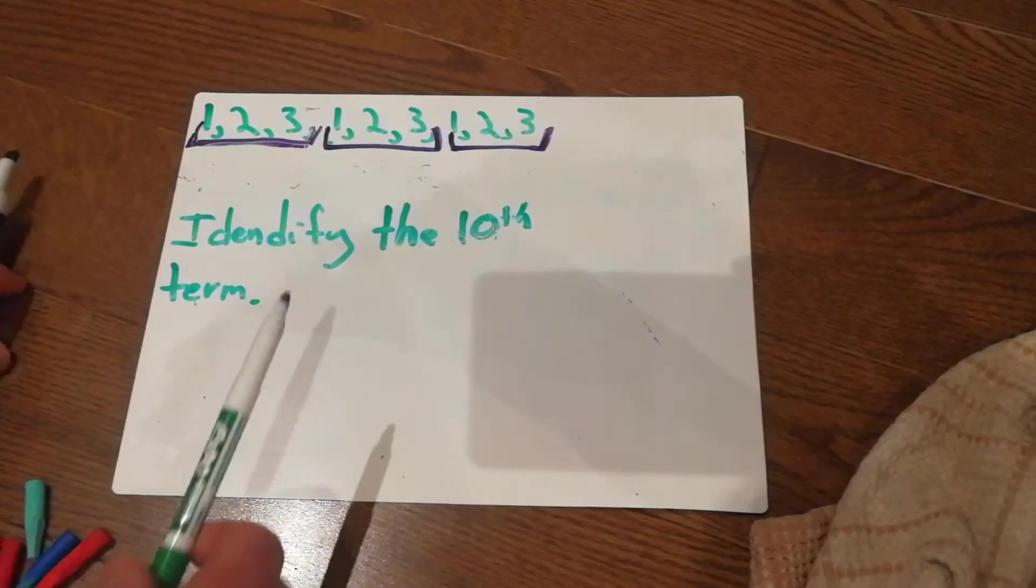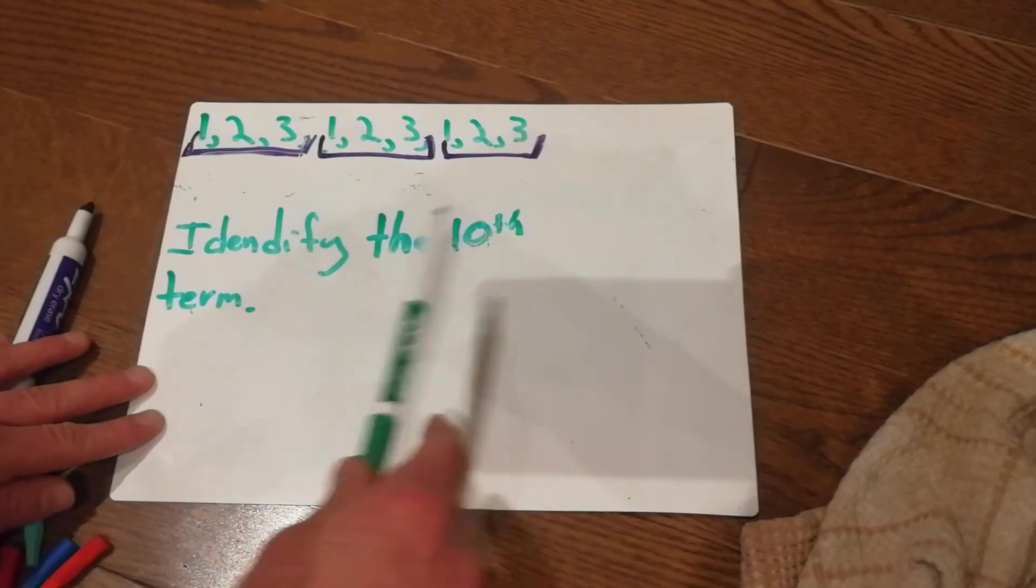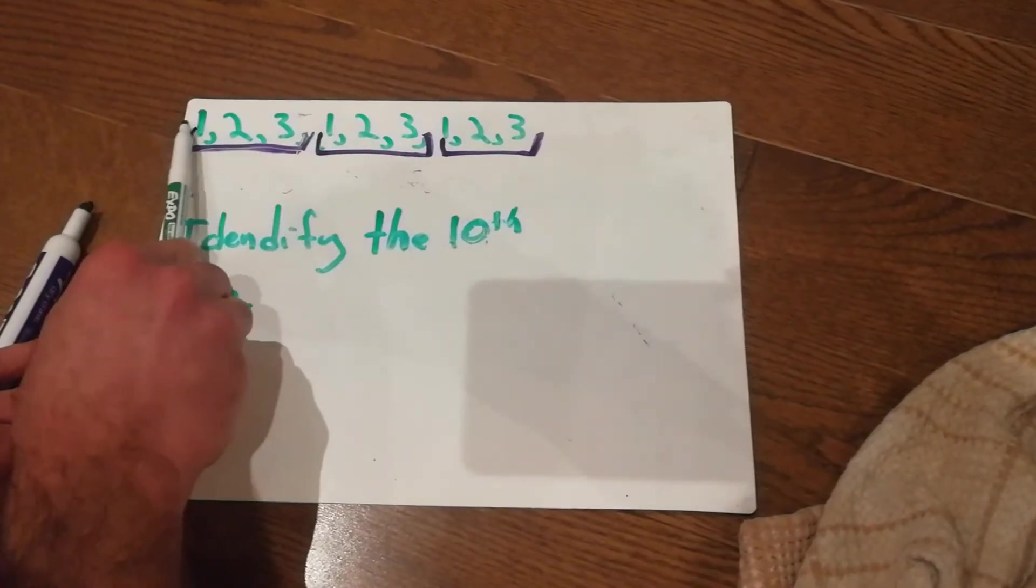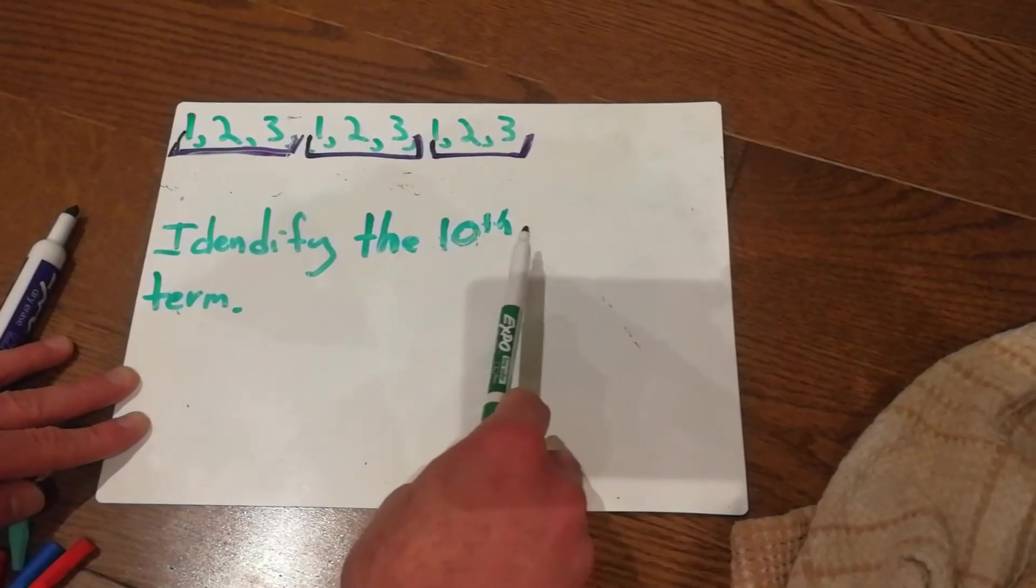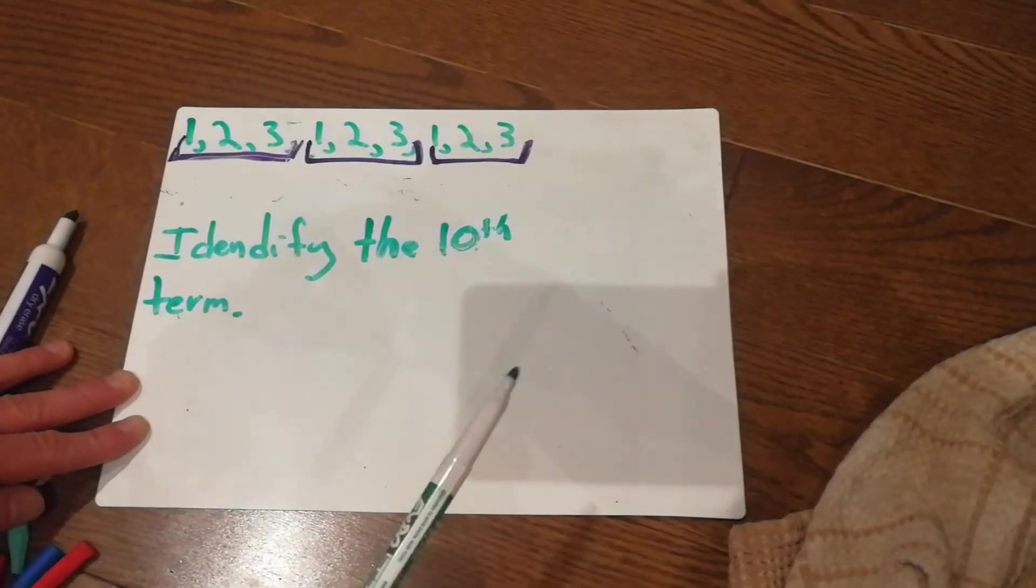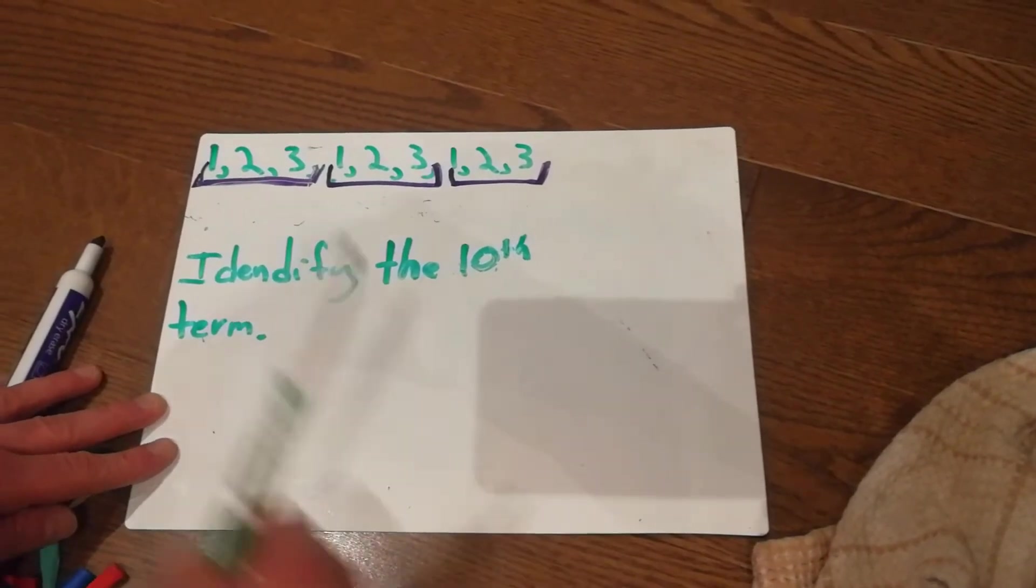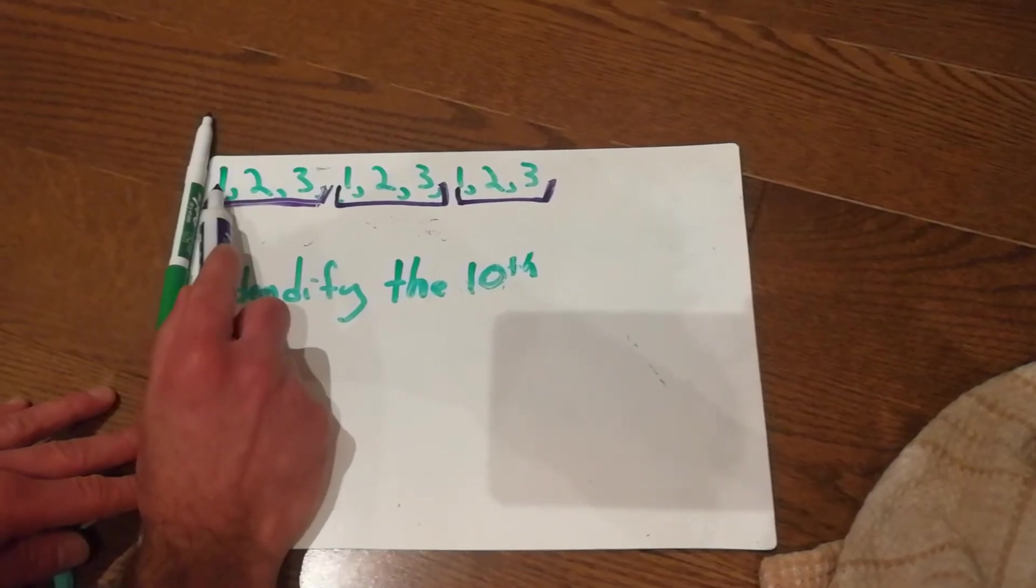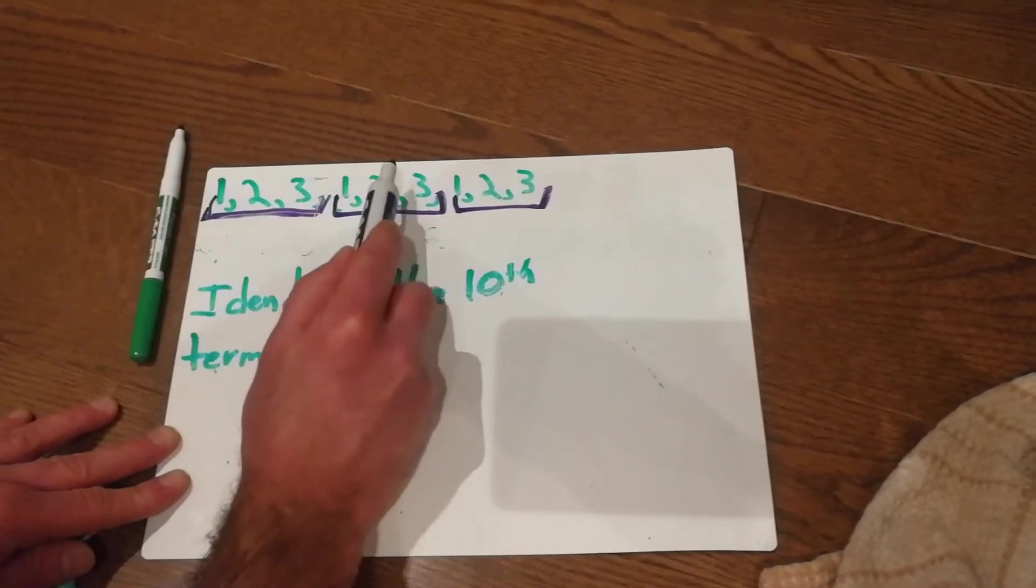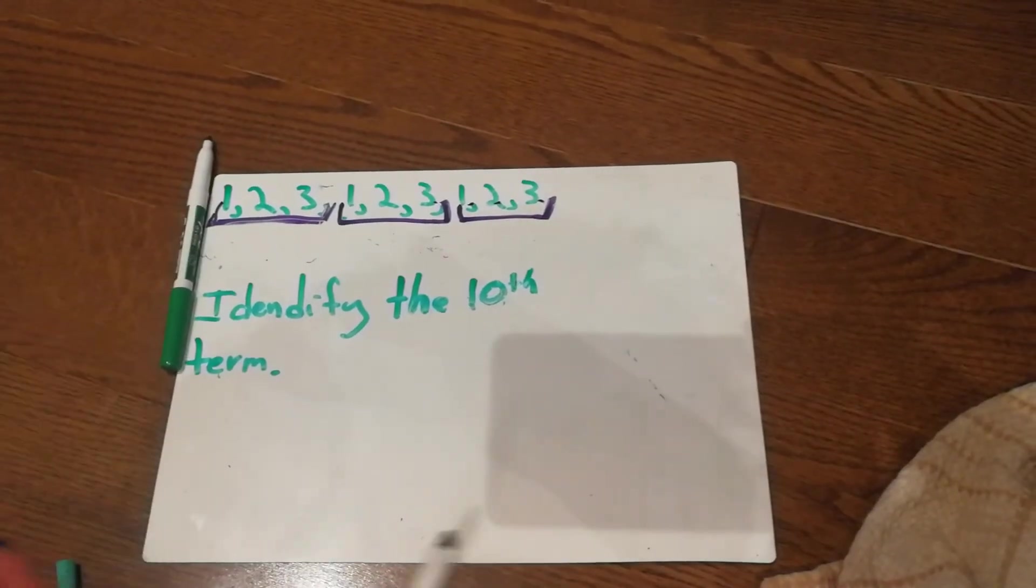Now what we're going to be looking at today are identifying, or answering questions like this. Either identifying the pattern core, or identifying particular terms in the pattern. So here, for an example, we're going to try to identify the 10th term. Now we don't have a 10th term in my pattern here. We have 1, 2, 3, 4, 5, 6, 7, 8, 9 terms. So we've got to figure out what the next term would be.